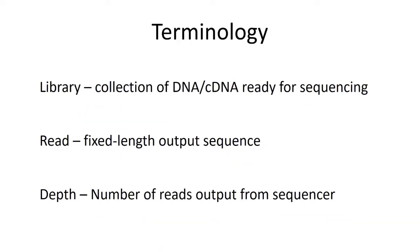Just some very basic terminology you may already know: a library is a collection of DNA or cDNA created from RNA that is ready to put on the sequencing machine. A read is a fixed-length output sequence you get from the sequencing machine, whether it's 50 bases, 75 bases, 125 bases, or something different — all of your reads are going to be exactly the same length. Your depth is the number of reads output from a sequencer. For example, from an Illumina NextSeq you get usually somewhere between 300 and 400 million reads, split among all the samples on that sequencing run.